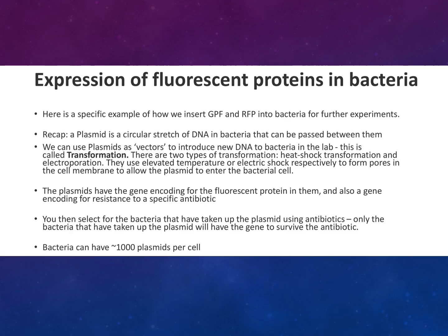So, expressing fluorescent proteins in bacteria. Here is a specific example of how we insert GFP and RFP into bacteria for further experiments. A plasmid is defined as a circular piece of DNA in bacteria that can be passed between them. We can use plasmids as vectors to introduce new DNA to bacteria in the lab. This is called transformation.